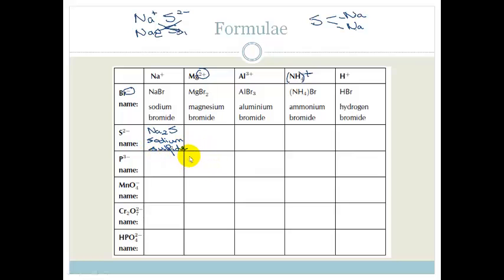Let's try another one. Let's go to this one. Again we're going to swap. So it would be Mg3P2. And what would be the name? The name would be magnesium phosphide.